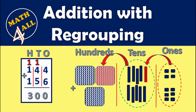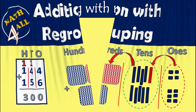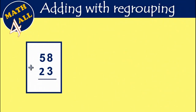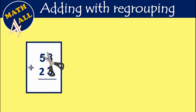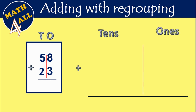Addition with regrouping — here we go. How can we add? First step: you have to cut between tens and ones. Don't forget to write the places and start from the ones place.